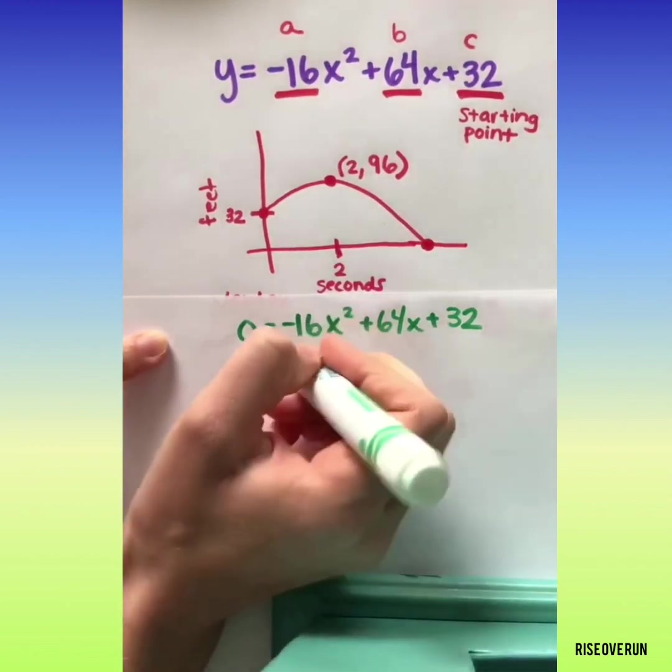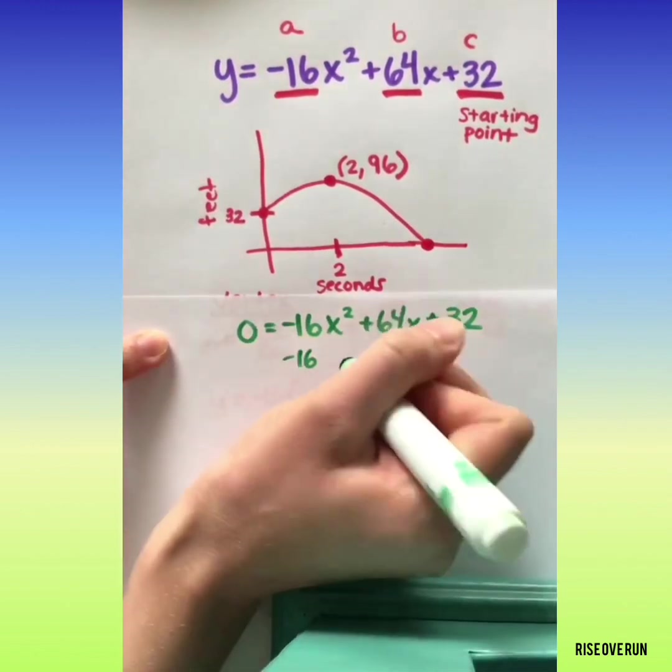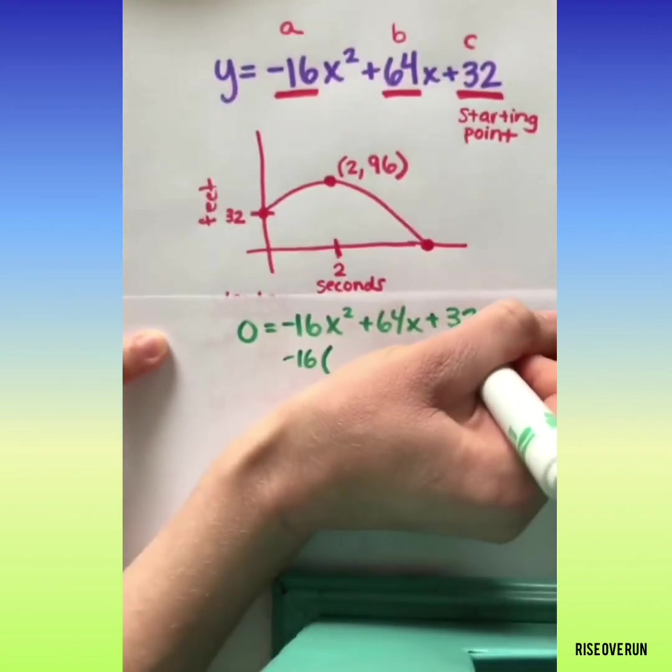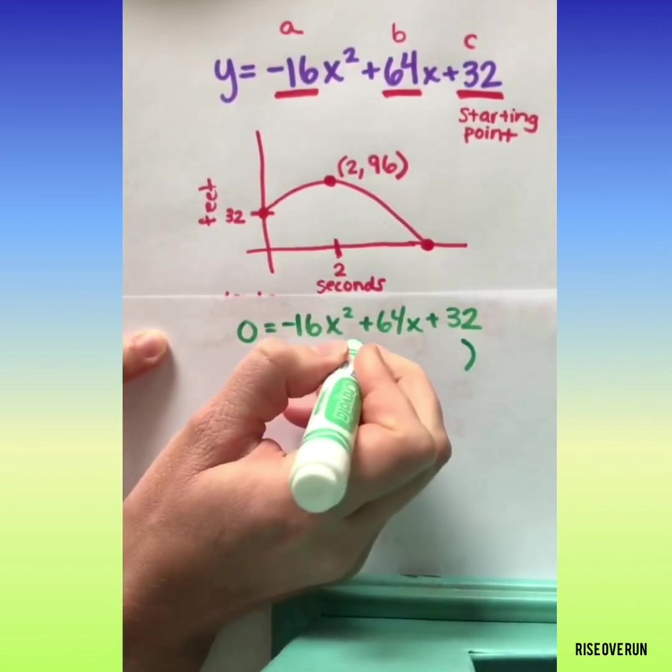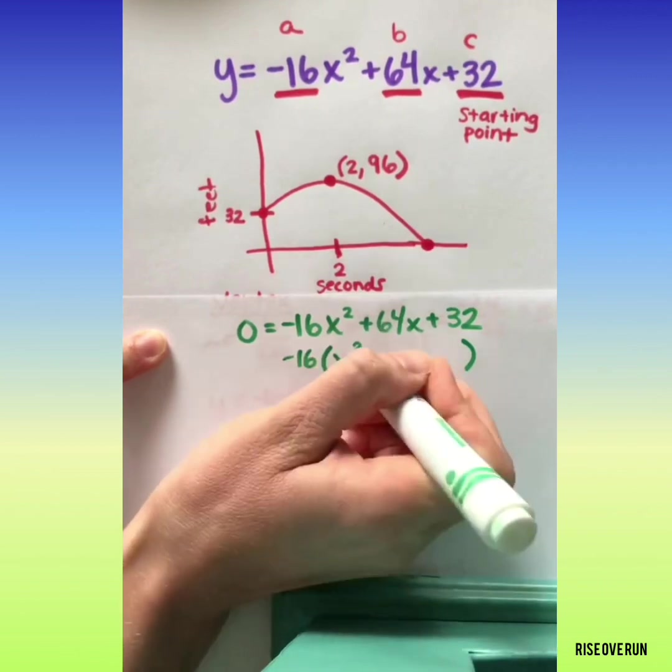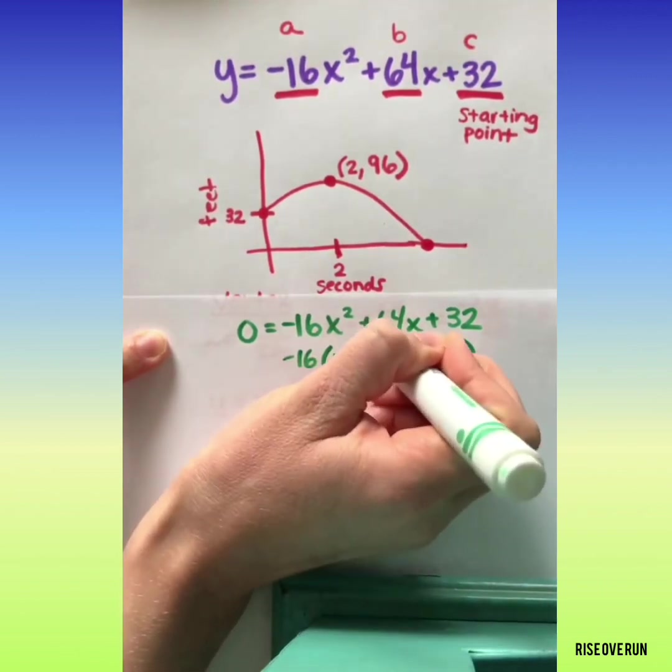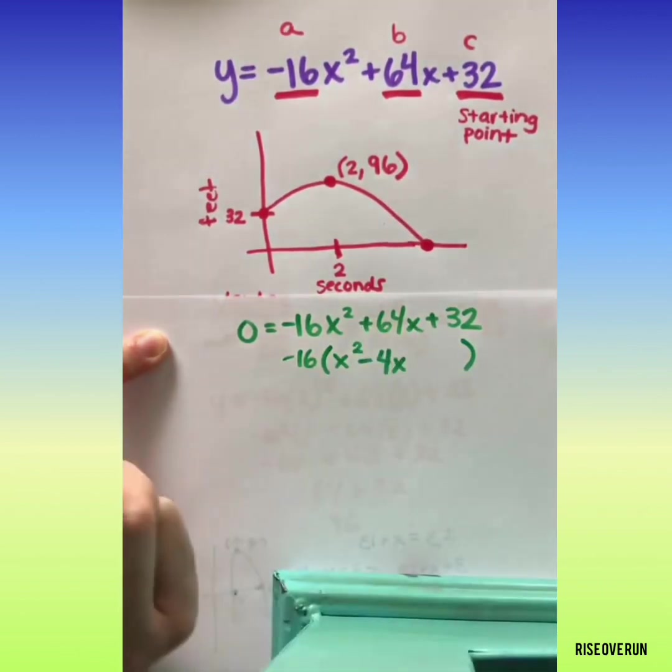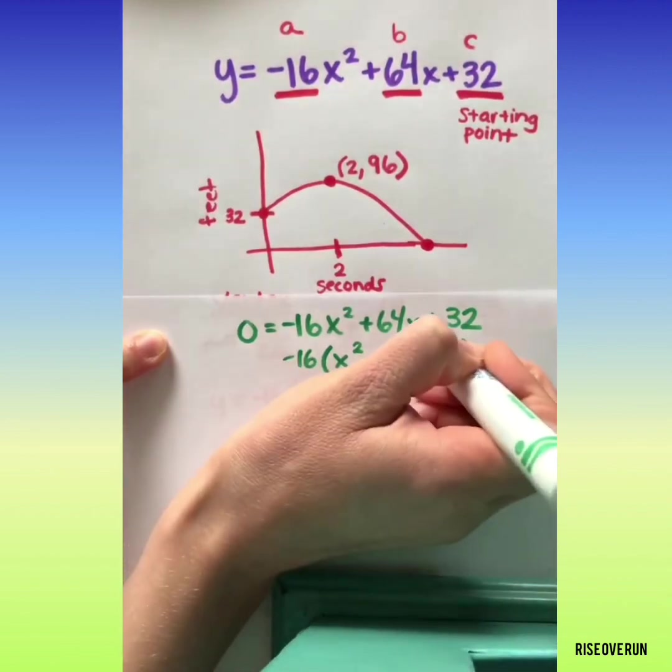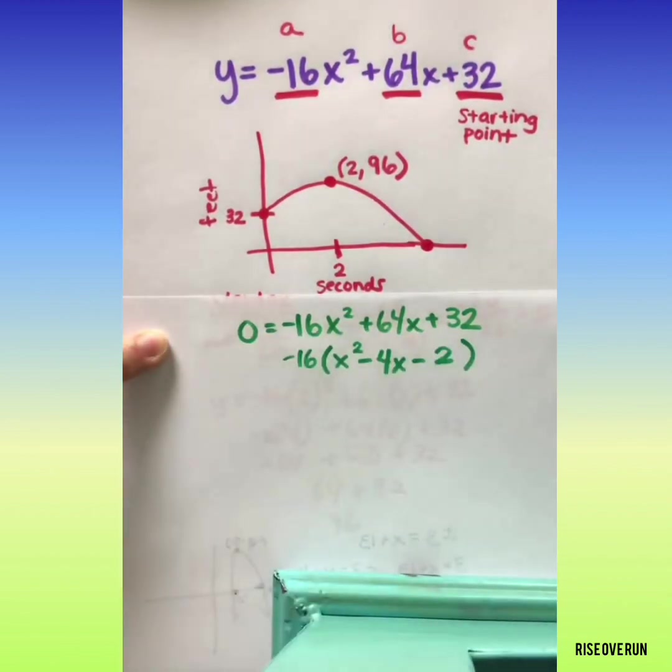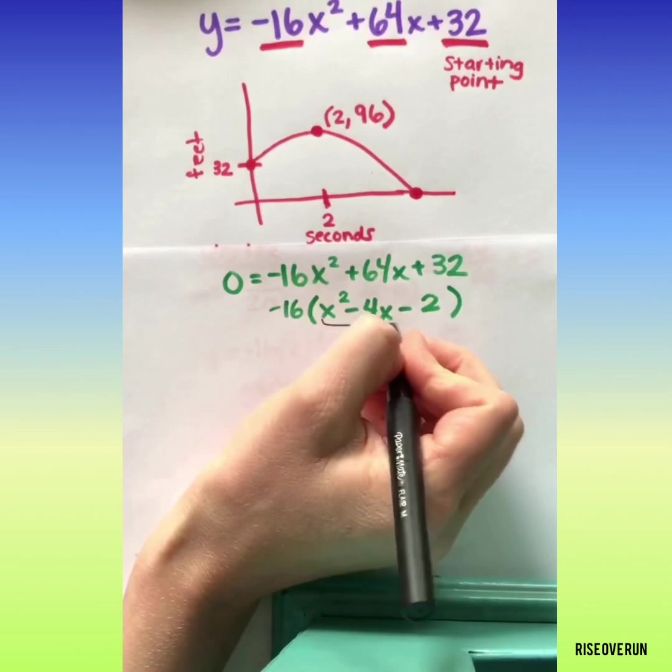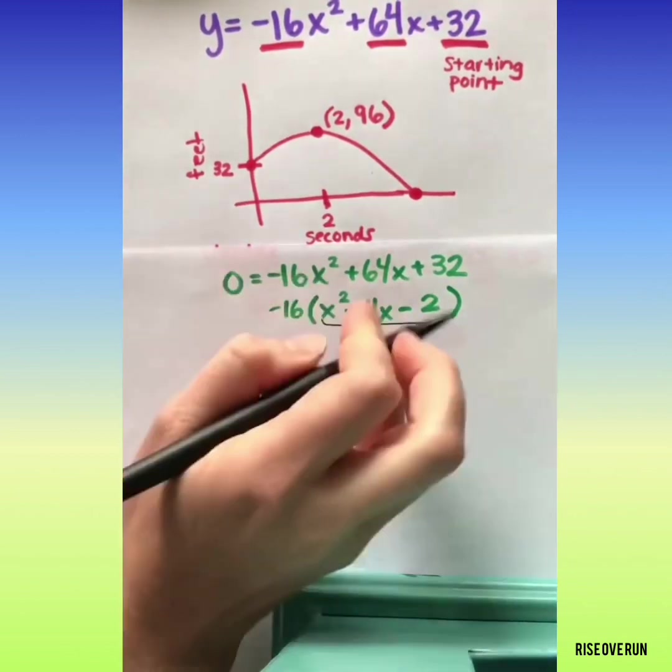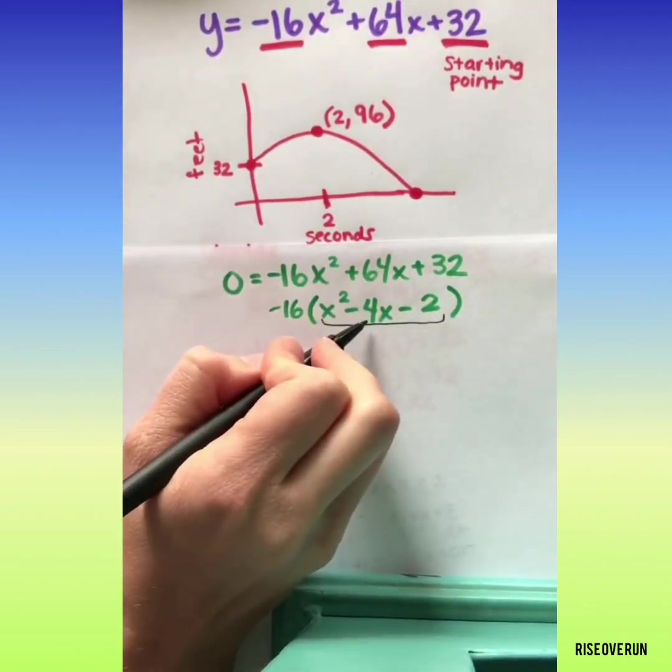Let's go ahead and take negative 16 out of all of these terms. That'll make that x squared minus 4x minus 2. So I can try to factor this. I need two numbers that multiply to give me negative 2 and add to give me negative 4. I can't think of any.